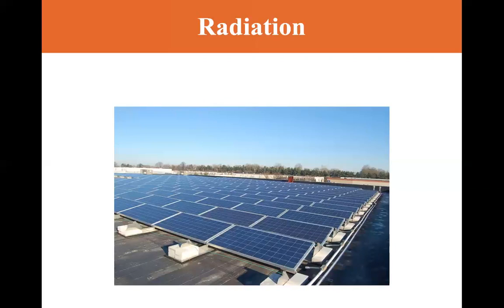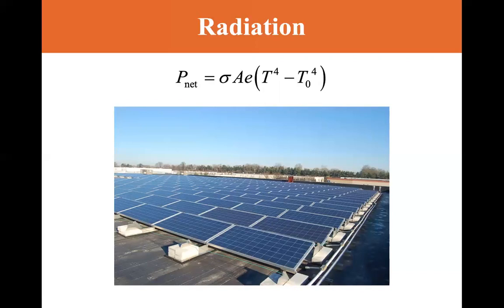There are 1,370 joules of electromagnetic radiation hitting every square meter, so there's a lot of harvesting potential with solar panels. P-net is equal to sigma times area times E times (T to the fourth minus T-zero to the fourth), where T-zero is the ambient surrounding average temperature.